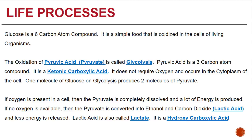If oxygen is present in a cell, then the pyruvate is completely oxidized and a lot of energy is produced. If there is no oxygen available, then the pyruvate is converted into ethanol and carbon dioxide, or lactic acid, and less energy is released. Lactic acid is also called lactate. It is a hydroxycarboxylic acid.